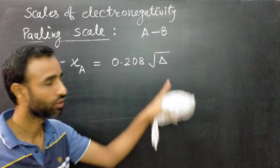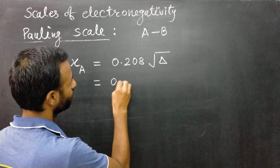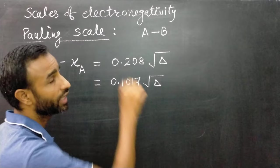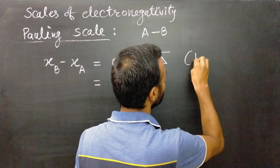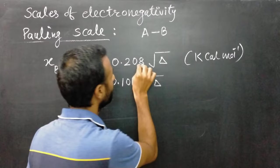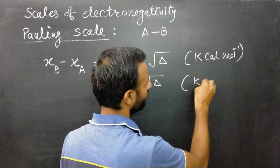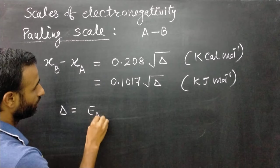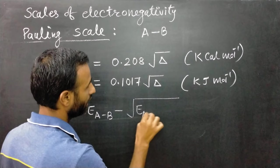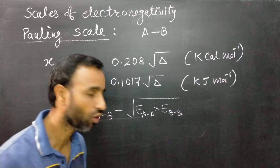What is delta? This scale is related to bond enthalpy — it is based on bond enthalpy measurements. If bond enthalpies are measured in kilocalories per mole, the value is 0.208. If bond enthalpy is measured in kilojoules per mole, then the value is 0.1017. Delta is equal to E_AB minus the square root of E_AA multiplied by E_BB, which is the geometric mean of A and B.